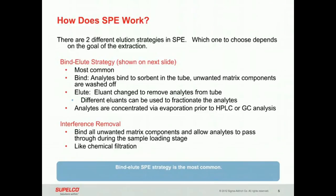The second strategy is the interference removal strategy. This is a quick strategy where the sample passes through the tube and all matrix components are retained on the tube or SPE device, while the analytes are washed off.